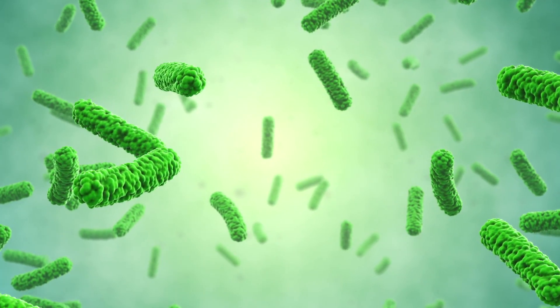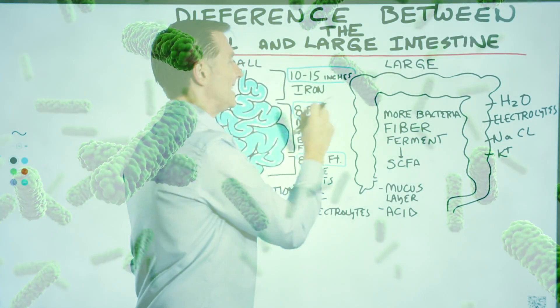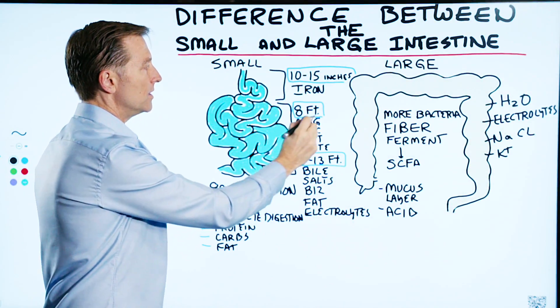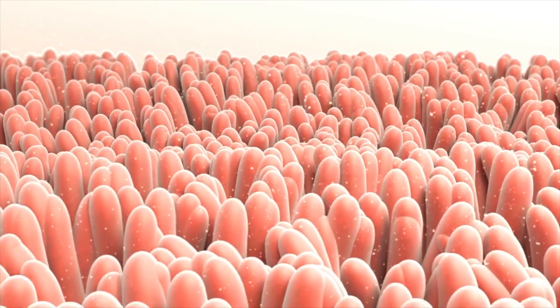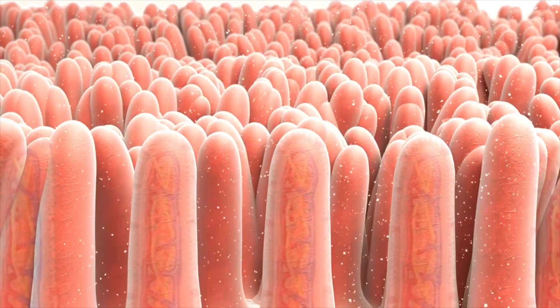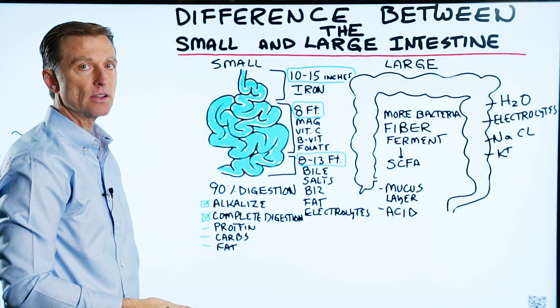Also, most of the friendly bacteria are in the large intestine, not the small. But when the microbes from the large intestine back up and get into the small, that's called SIBO, small intestinal bacterial overgrowth.